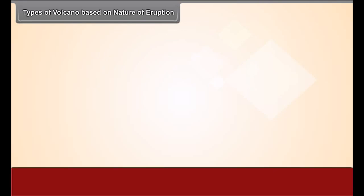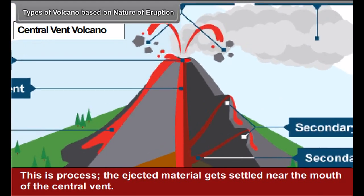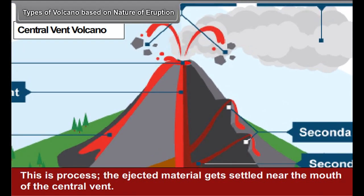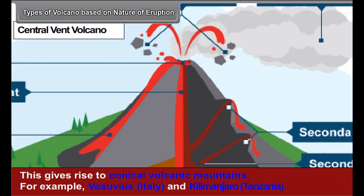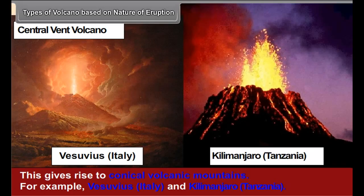Types of volcanoes based on nature of eruption. If lava is released through a vent, a pipe-like opening, it is called a central vent volcano. In this process, the ejected material gets settled near the mouth of the central vent. This gives rise to conical volcanic mountains. For example, Vesuvius, Italy and Kilimanjaro.